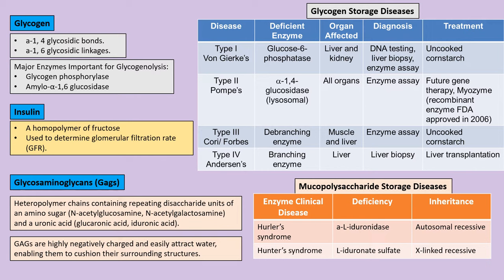Now we look at glycogen storage diseases. Storage diseases occur when an enzyme is missing or deficient, causing substrates to accumulate abnormally in organs like the liver, heart, spleen, and muscle. In glycogen storage diseases, glycogen is not properly broken down into glucose, so intermediates accumulate. Von Gierke disease is an important example.